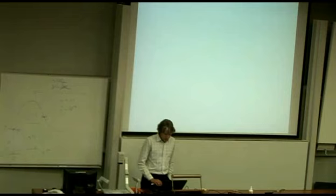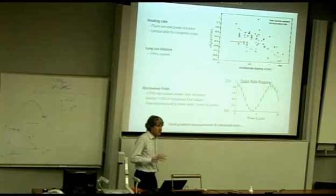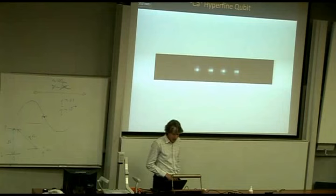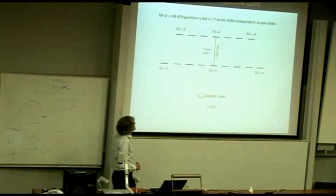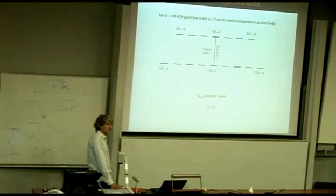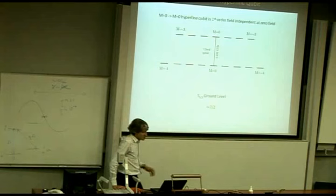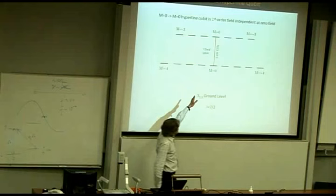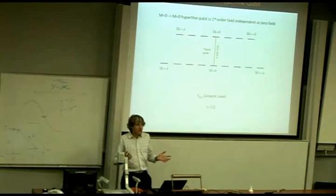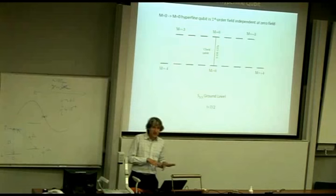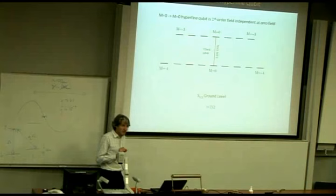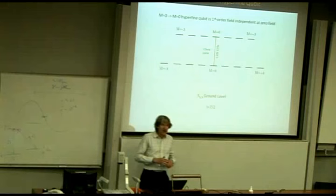Let's look at the qubit we've used in that trap. The ground state of calcium-43 has a nuclear spin of 7/2, giving lots of states — perhaps too many for our taste. There are various options for atomic clock qubits. The obvious one is the transition to the m equals zero state in the ground state, which does not have a first-order Zeeman shift, so it's already very insensitive to external magnetic fields. However, the only place it truly has no first-order Zeeman shift is at zero field, where all the other states are degenerate, making it impossible to isolate two qubit states.